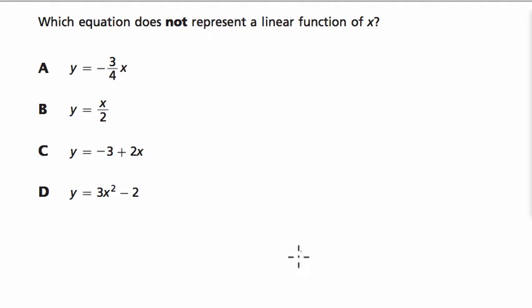So linear function means essentially an equation or relationship that when you graph it you get a line. This is nothing you really need to memorize, right? Just look at the word linear. The first four letters are just 'line.' So a linear function, when we represent it as a graph, is going to be a line.